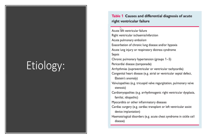The causes and differential diagnosis of acute right ventricular failure include acute pulmonary embolism, exacerbation of chronic lung disease or hypoxia, acute lung injury, sepsis, pericardial diseases, coronary artery disease, or right ventricular infarct. These are important etiologies to keep in mind when investigating these patients further.